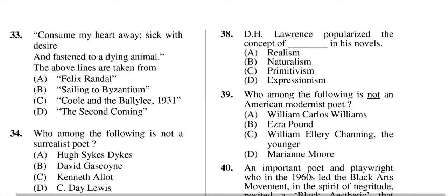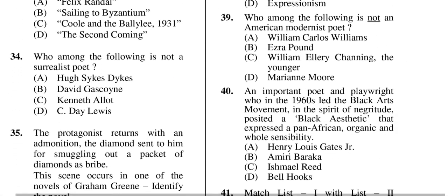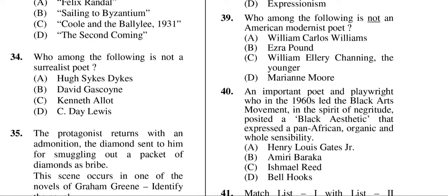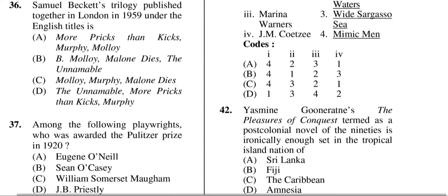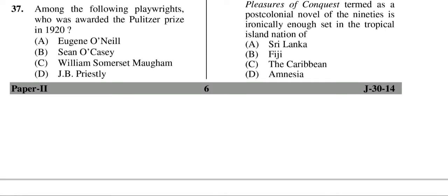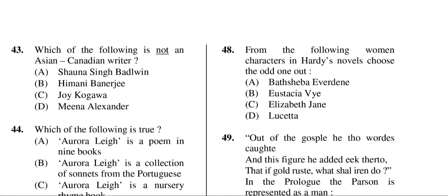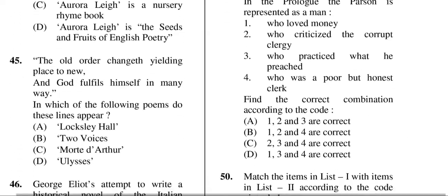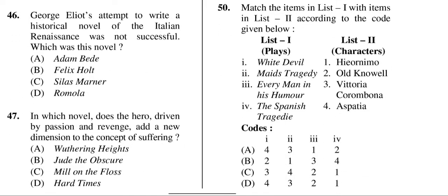Question thirty-four: who among the following is not a surrealist poet? The correct answer is D — C. Day Lewis. Question thirty-seven: among the following playwrights, who was awarded the Pulitzer Prize in 1920? The correct answer is A — Eugene O'Neill. Question forty-three: which of the following is not an Asian Canadian writer? That is D — Meena Alexander.